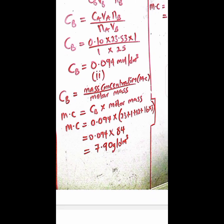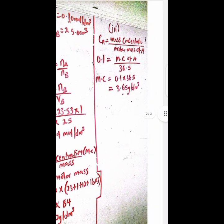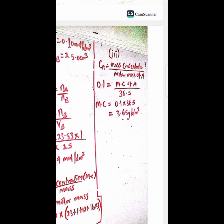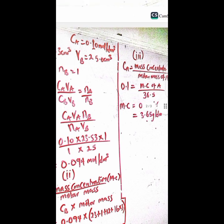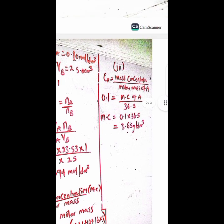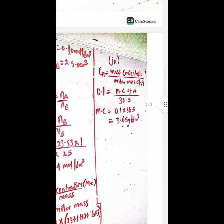So then eventually we got that mass to be 7.90 grams per dm cubed. So then the third question requested that we find the concentration of acid in gram per dm cubed. Don't forget the 0.1 which is concentration of acid CA was given in the question.